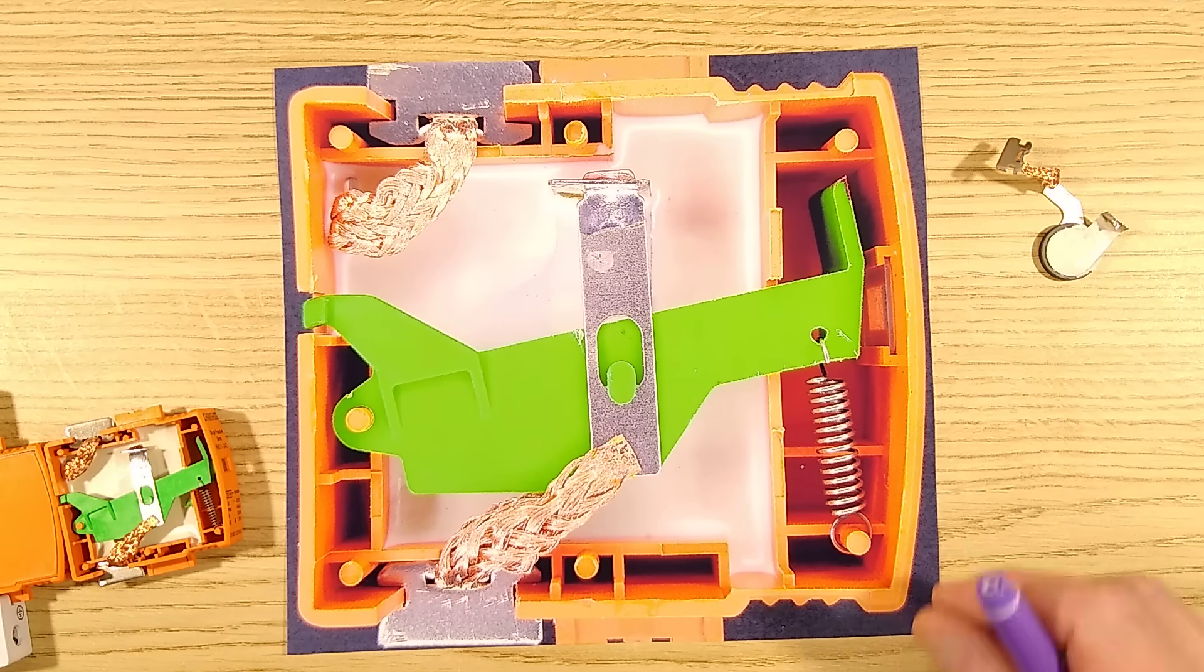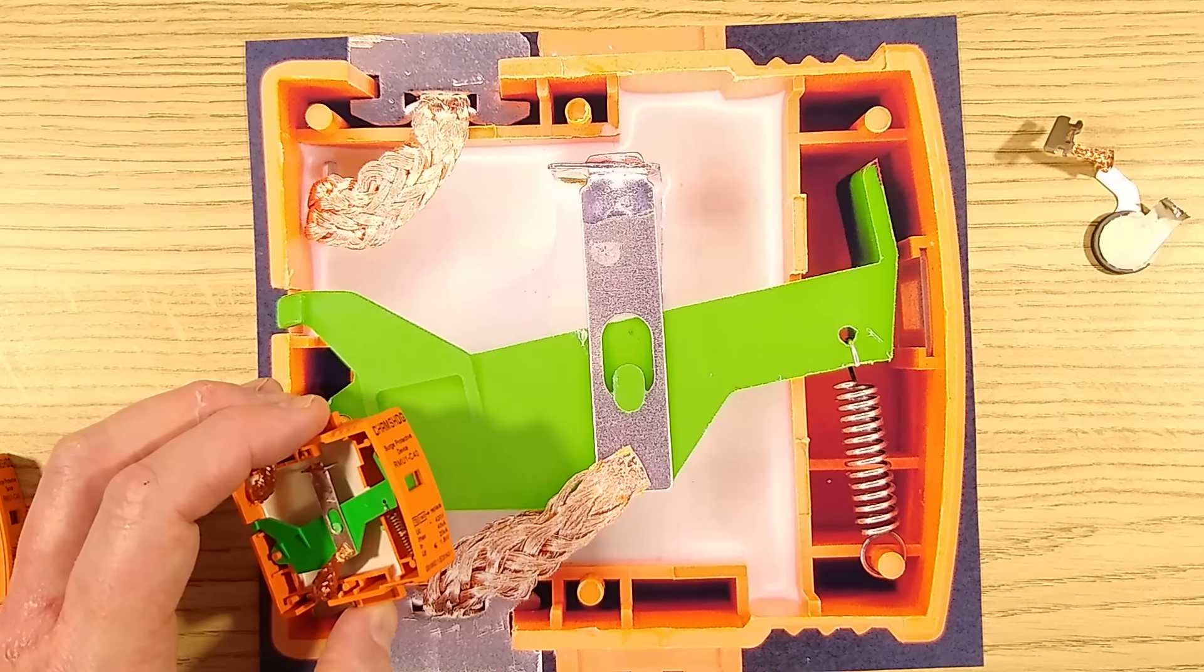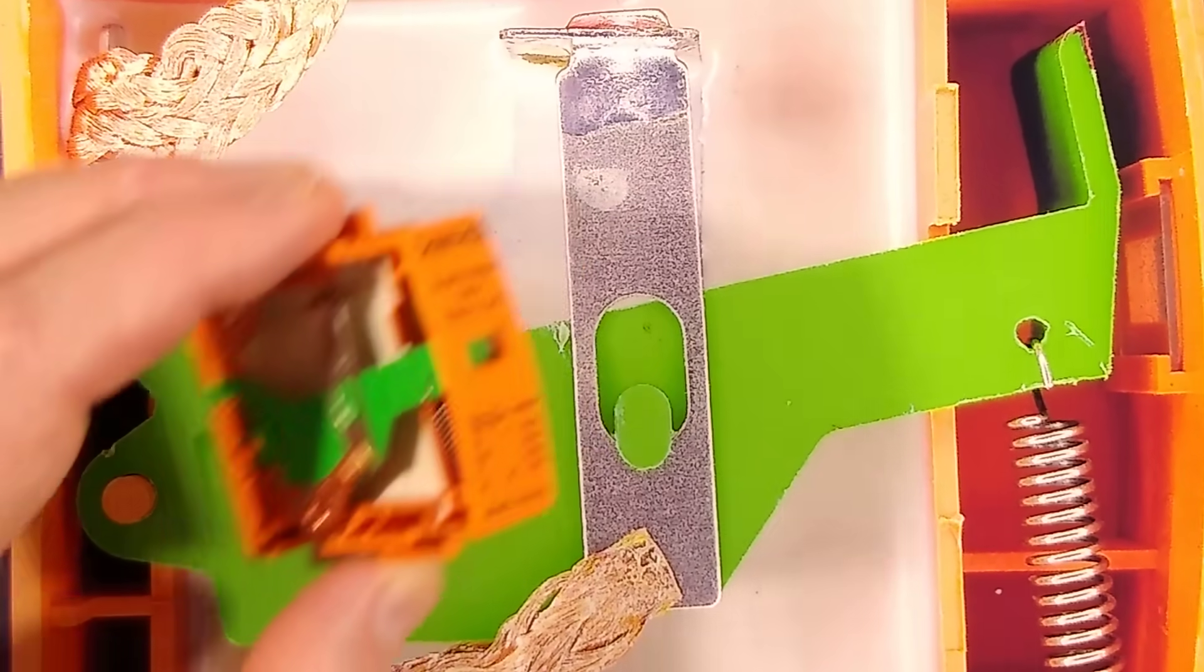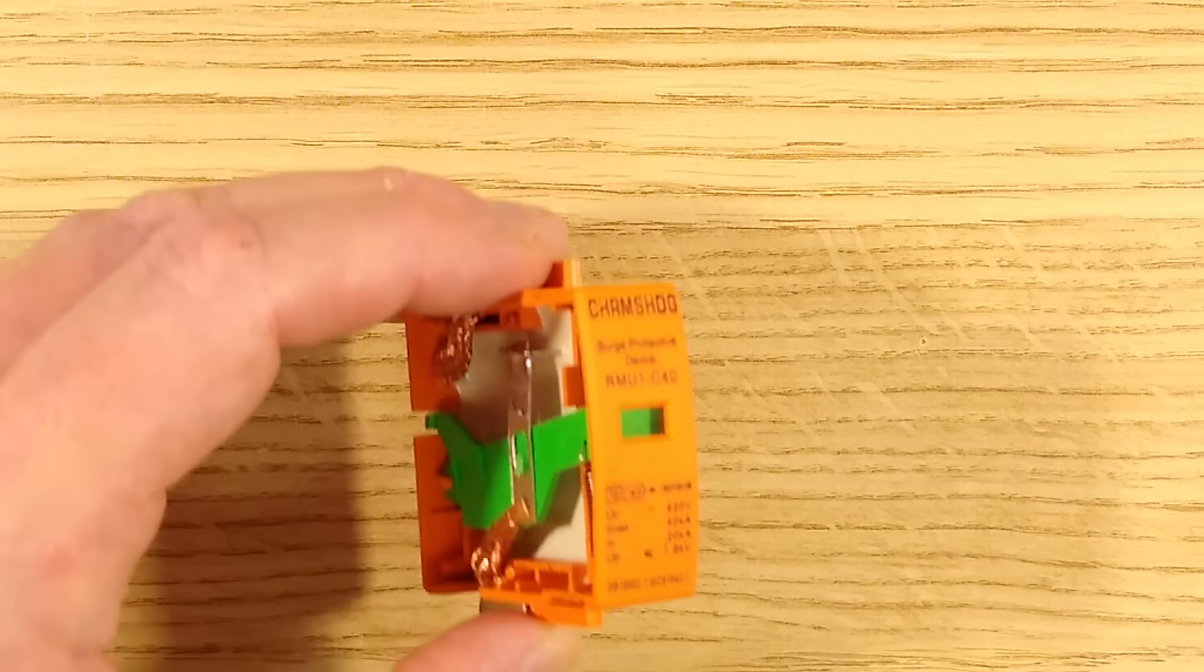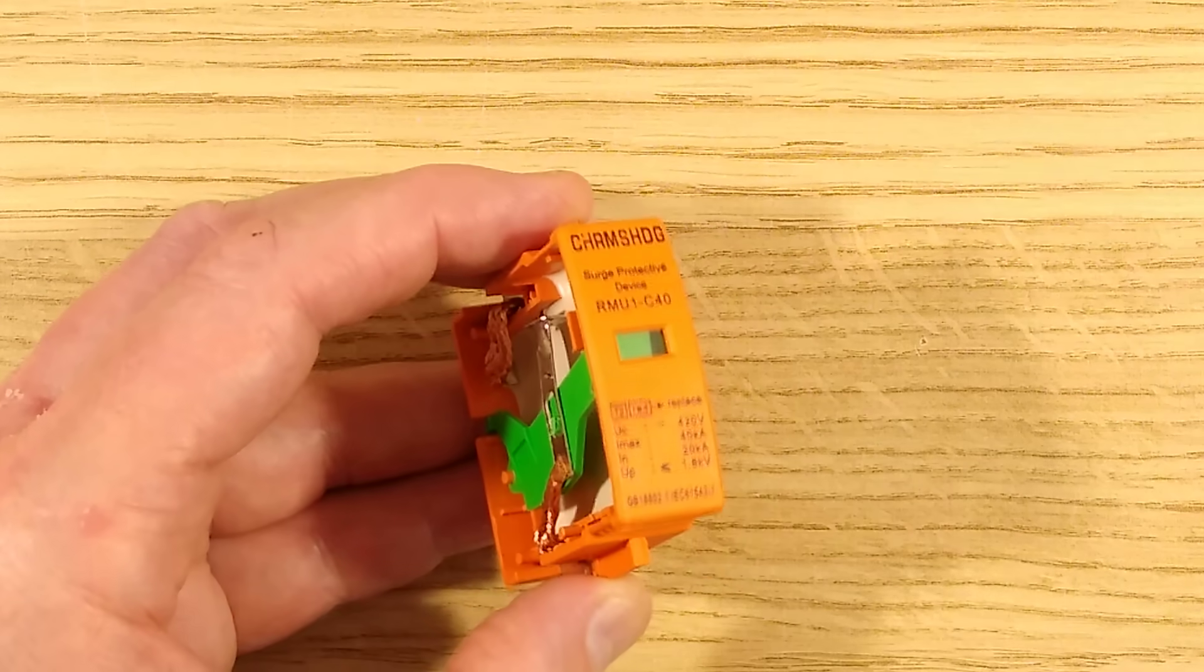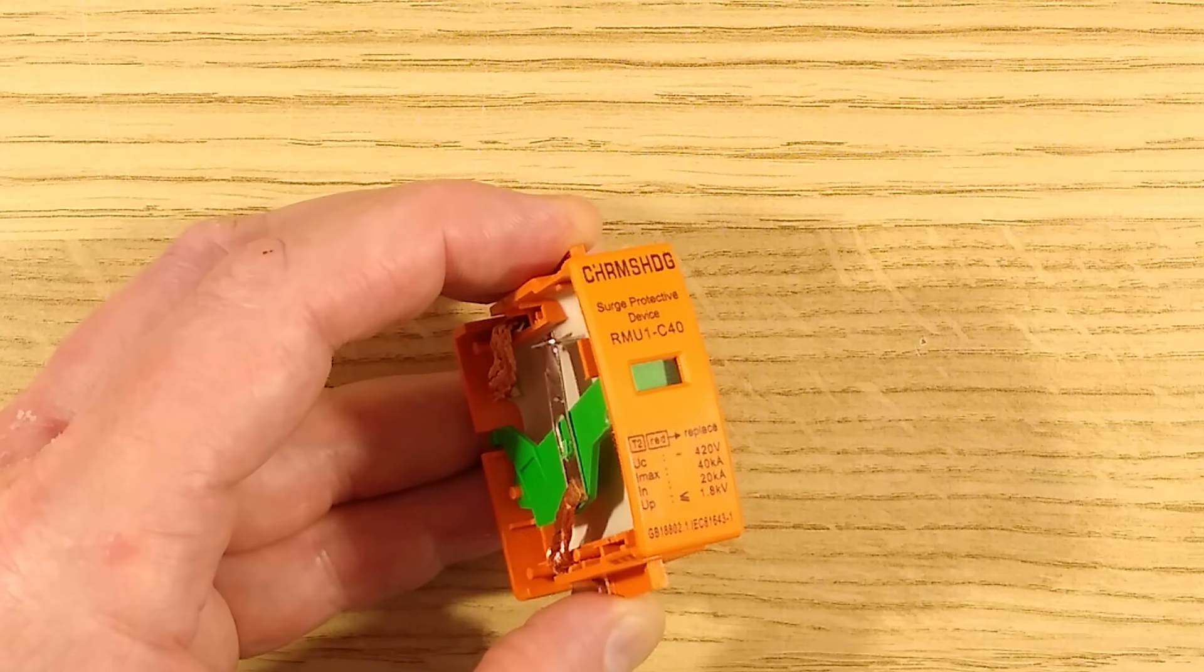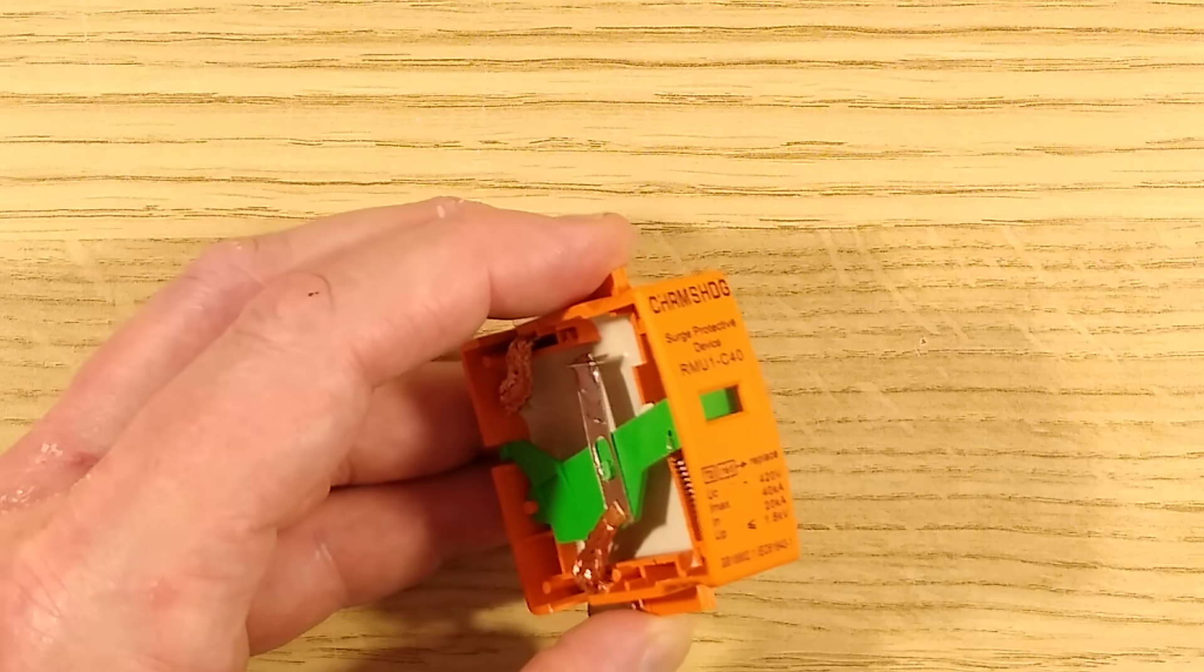However, there is a problem with this. Let me show you what happens when this one trips. So I'll zoom in again. And you can see that this one has the wee green window there. Let me just focus down on that. So you can see it's green, which means that is good, it's operating. However, when it trips, let me find something to trip it with here, a pair of long-nose pliers.